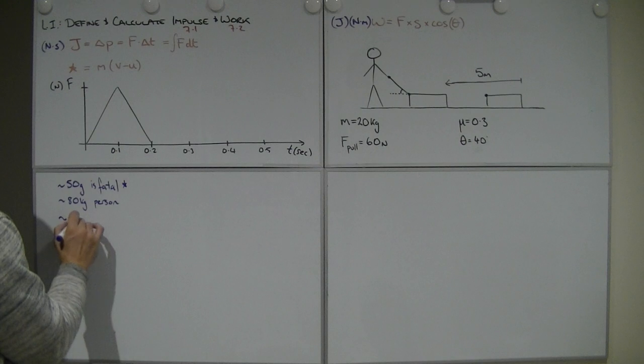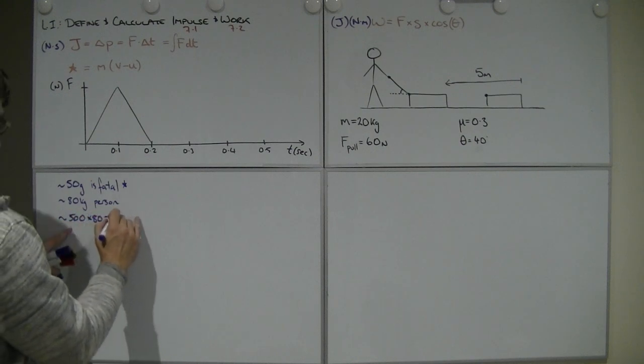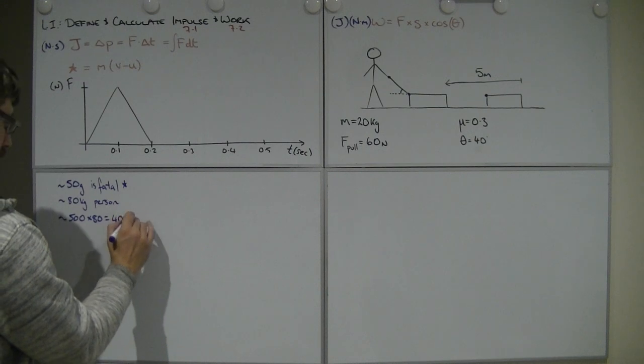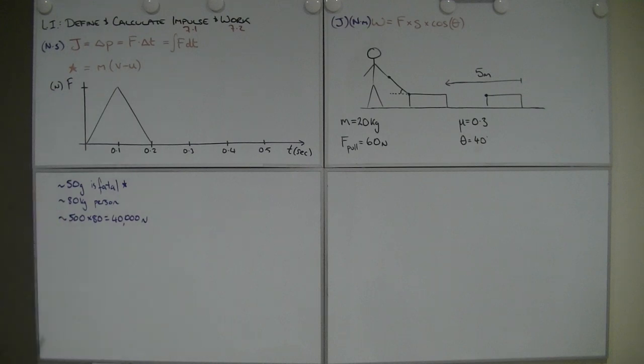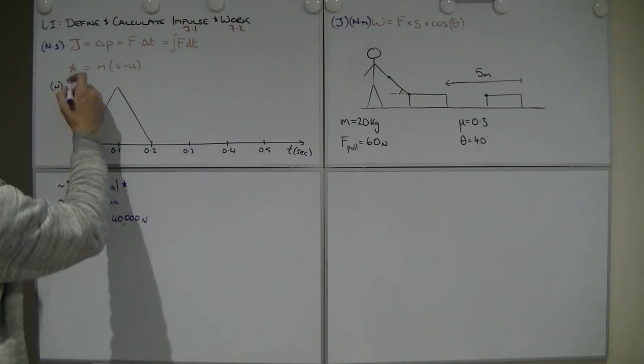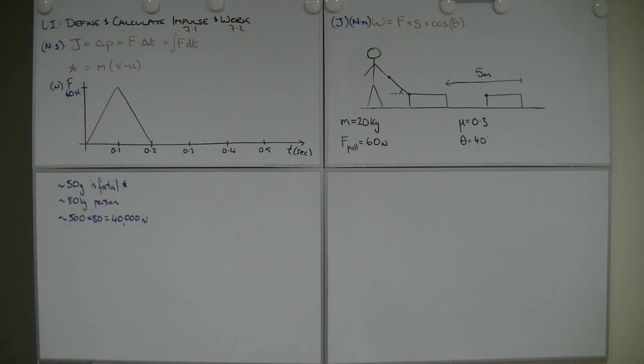So what do we get? 500 multiplied by 80 is 40,000 newtons. So I've got a force of 40,000 newtons as our peak force. That's going to kill you.